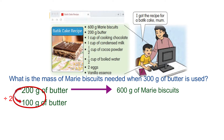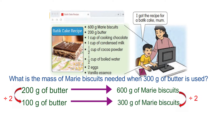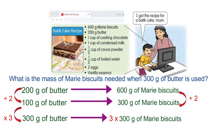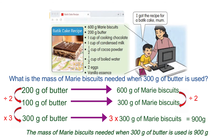When you divide 200 grams of butter by 2, we need to do the same operation for 600 grams of Marie biscuits. So for 100 grams of butter, we need 300 grams of Marie biscuits. From 100 grams of butter to 300 grams of butter, we multiply by 3. Do the same operation for Marie biscuits — 300 grams multiplied by 3, we will get 900 grams. So the mass of Marie biscuits needed when 300 grams of butter is used is 900 grams.